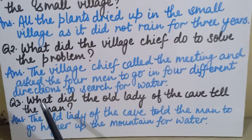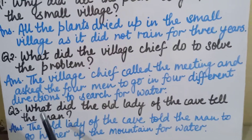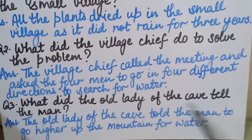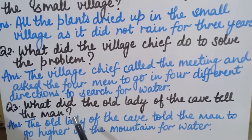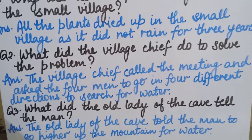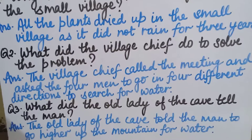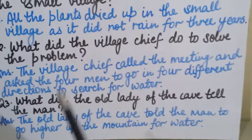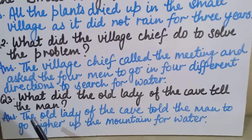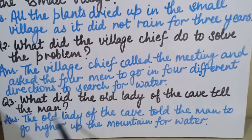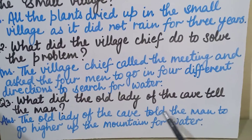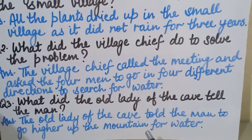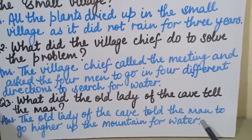Third question: What did the old lady of the cave tell the man? The answer is: the old lady of the cave told the man to go higher up the mountain for water.